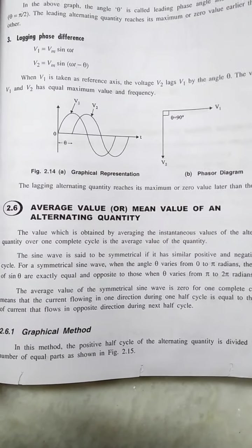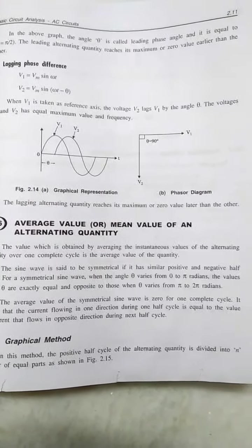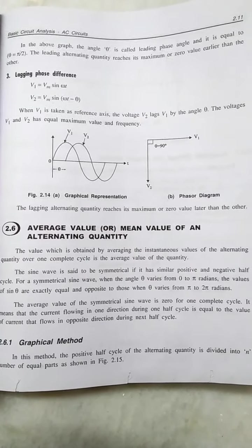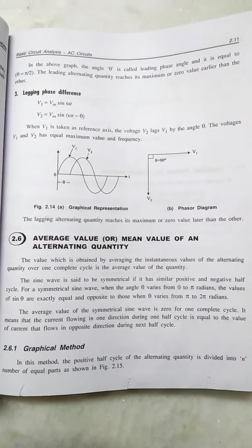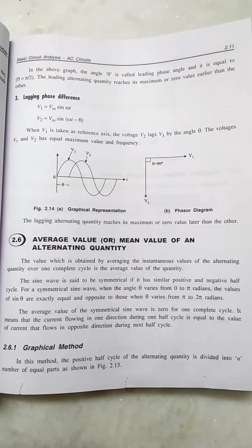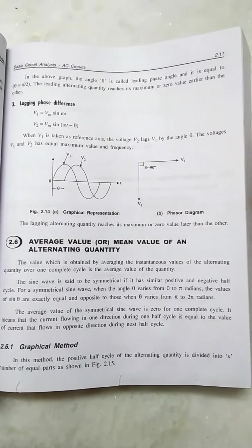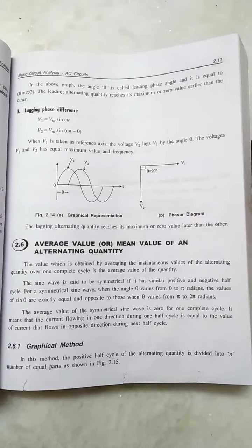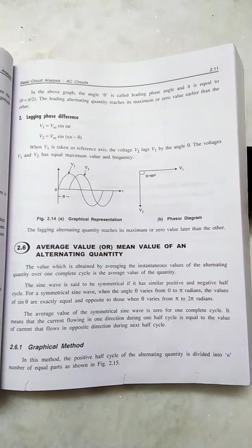Next, we will see what is the average value or mean value of an alternating quantity. The value obtained by averaging the instantaneous values of the alternating quantity over one complete cycle is called the average value. The sine wave is symmetrical because it has similar positive and negative values in the cycle. For a symmetric sine waveform, when θ varies from 0 to π, the values of sin(θ) are exactly equal and opposite to those when θ varies from π to 2π. So the average value of the symmetric sine waveform is 0 for one complete cycle, meaning the current in one direction equals the current in the opposite direction during the negative half cycle.